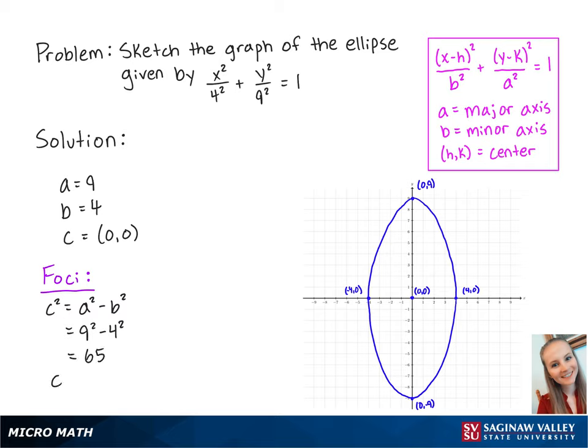So c is equal to the square root of 65, which is roughly about 8.06. So the two focus points will be at 0, 8.06, and 0, negative 8.06.